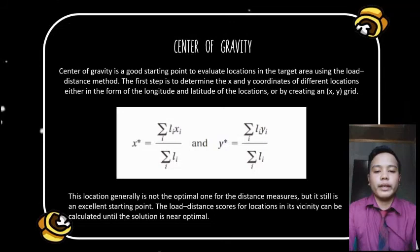The center of gravity is determined by the formula: CX equals the X coordinate of the center of gravity; CY equals the Y coordinate of the center of gravity; DIX equals the X coordinate of location I; DIY equals the Y coordinate of location I.